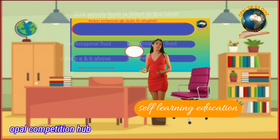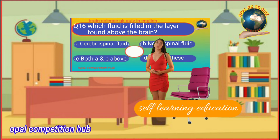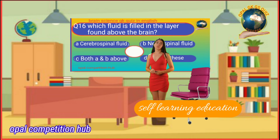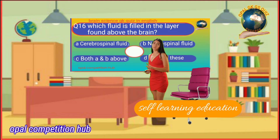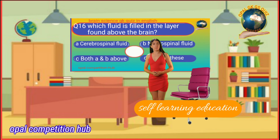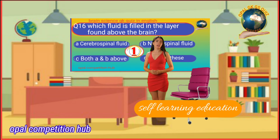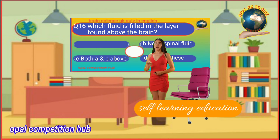Question number 15: Which is the largest part of the human brain? Question number 16: Which fluid is filled in the layer found above the brain? Option A: Cerebrospinal fluid. Option B: Neurospinal fluid. Option C: Both A and B. Option D: None of these. Your time starts now. Your answer will be Option A: Cerebrospinal fluid.